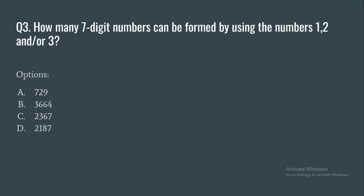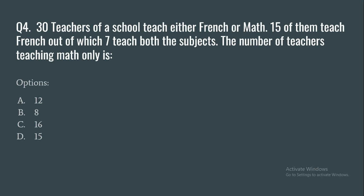Question 3: How many seven-digit numbers can be formed by using the digits 1, 2, and/or 3? Options: 7, 2187, 3, 6642, 3672, or 18.